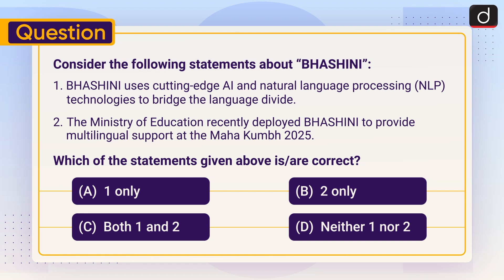A: One only. B: Two only. C: Both one and two. D: Neither one nor two. Send the answer to this question in the comment section.